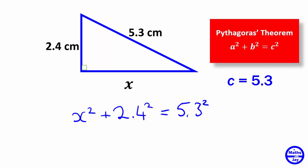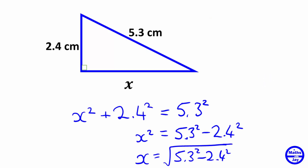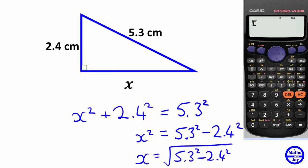And then we want to make x the subject. So first of all, let's make x squared the subject by subtracting 2.4 squared from 5.3 squared. And then we're just going to key that into our calculator and square root to get x. So we want the square root of 5.3 squared subtract 2.4 squared.